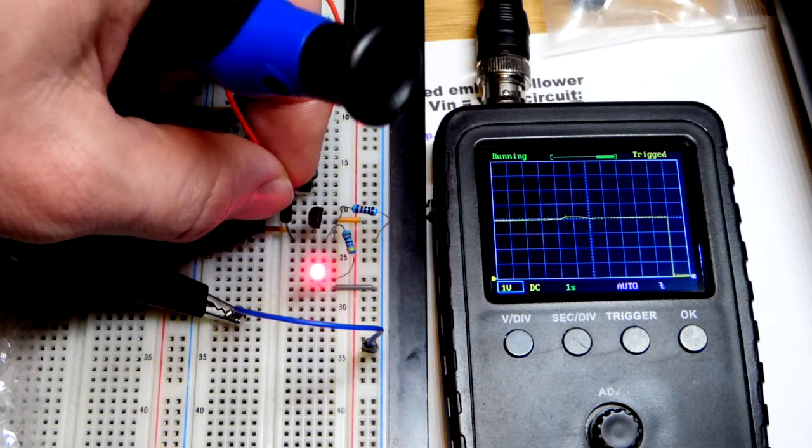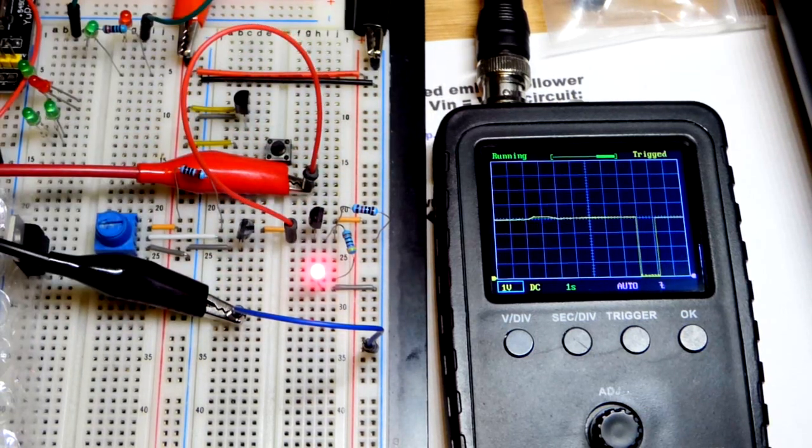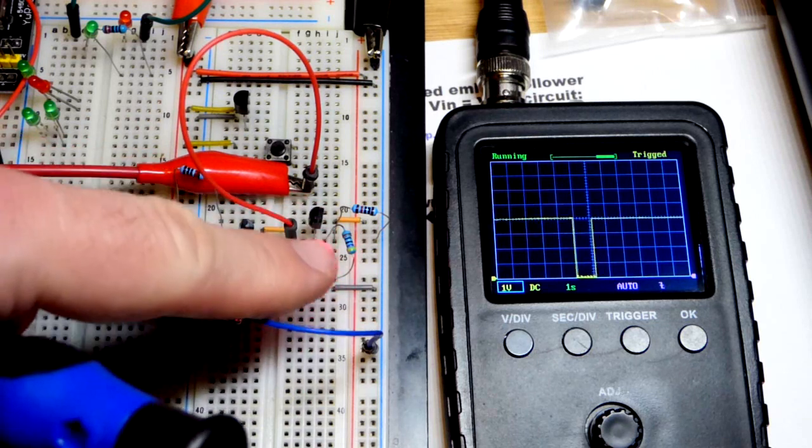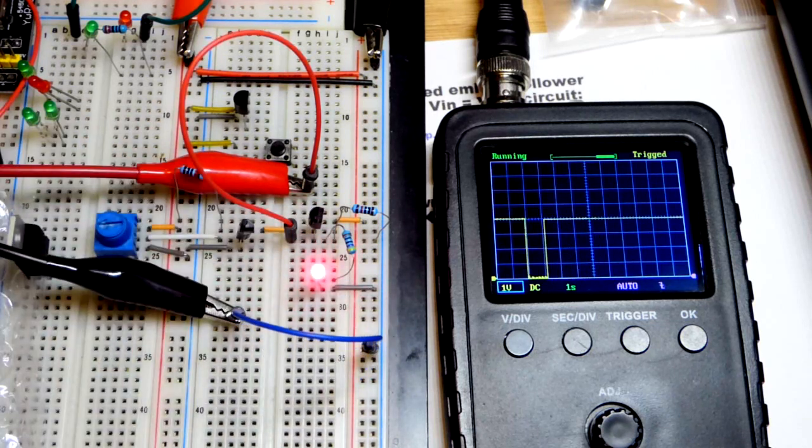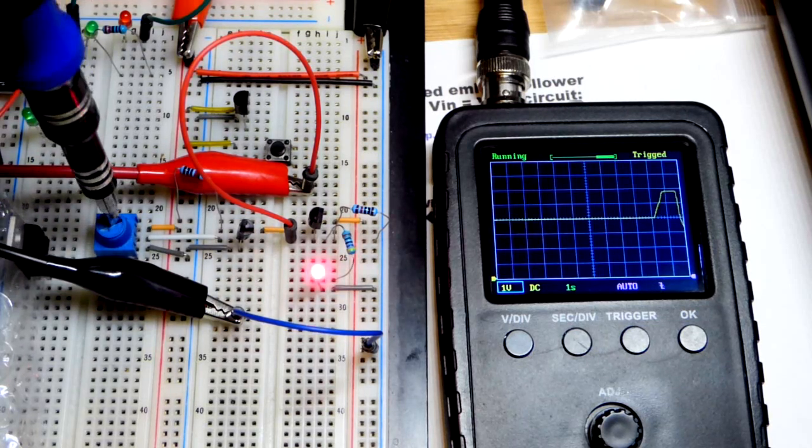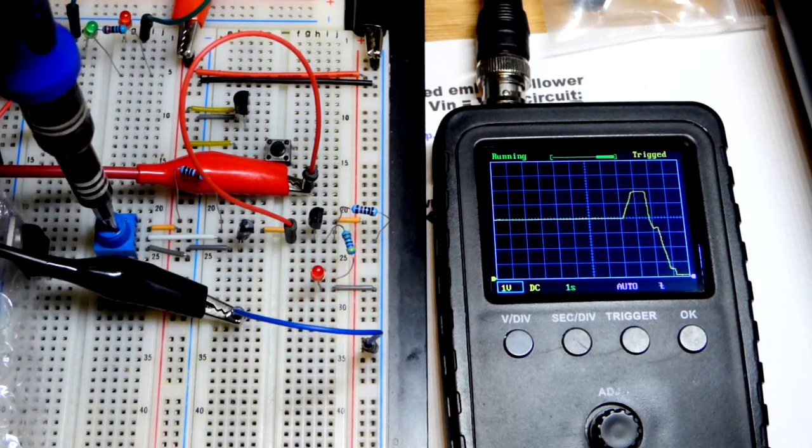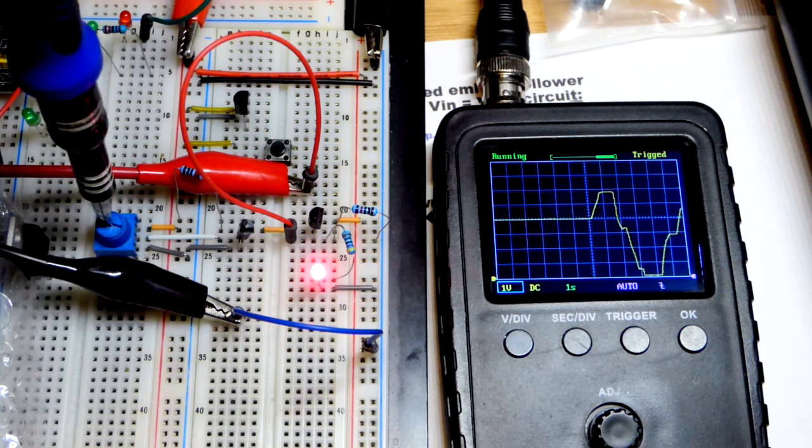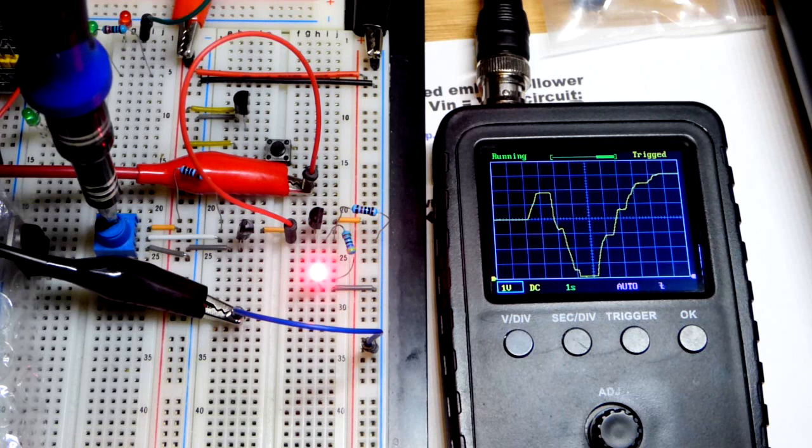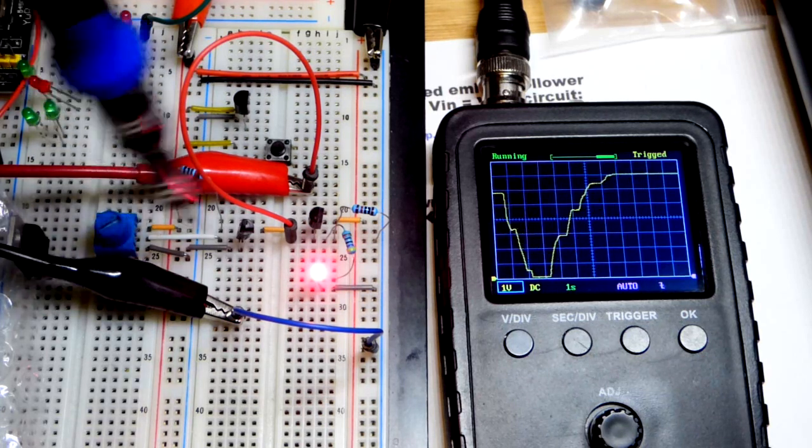I'm going to move the jumper from the trim pot to the load, and as you can see the load has the same voltage - that's the voltage across the resistor, the LED. Now I'm going to raise it, or we can go down of course, and it's going in line with the trim pot exactly. But again we have those two diode drops basically from emitter follower.